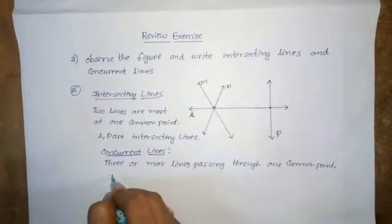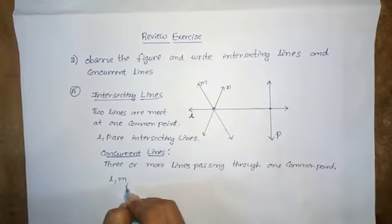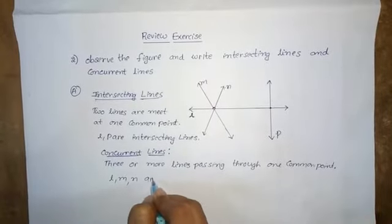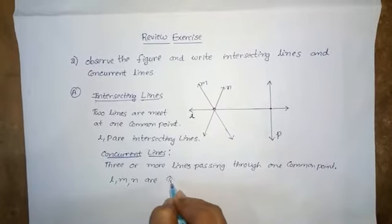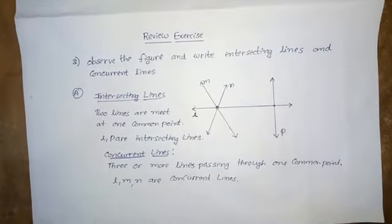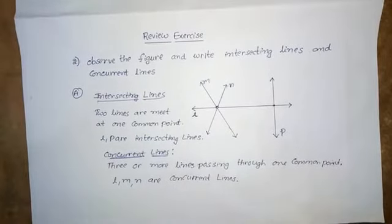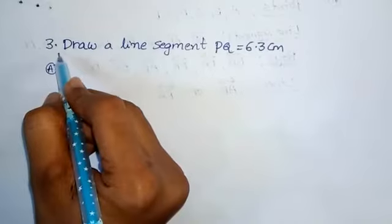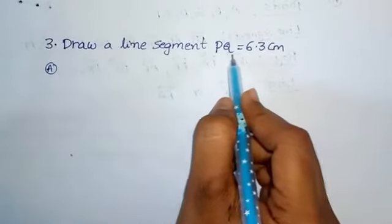So L, M and N are concurrent lines. This is the solution for the second problem. Next, problem three: draw a line segment PQ equal to 6.3 cm.